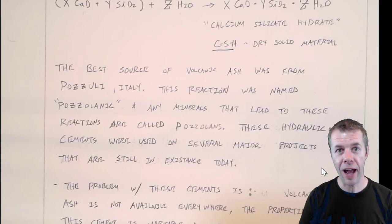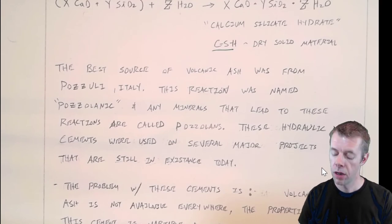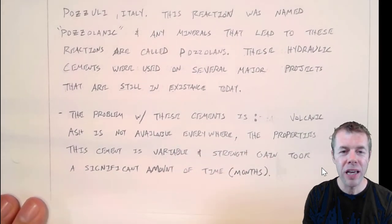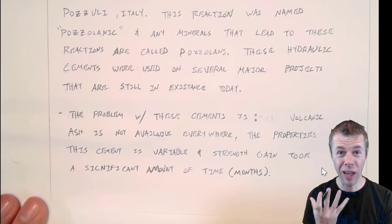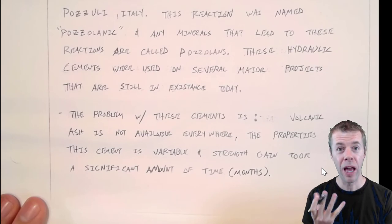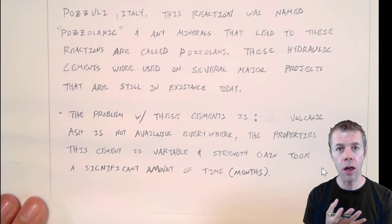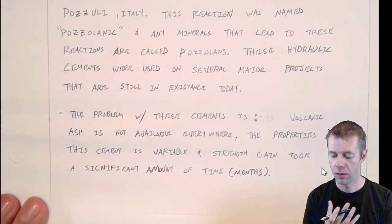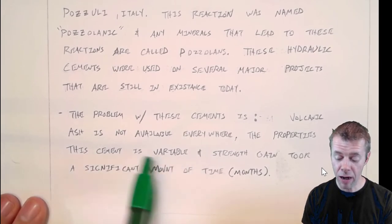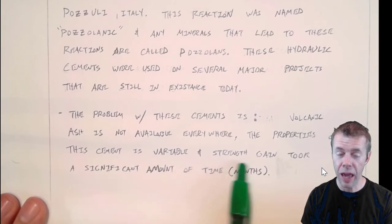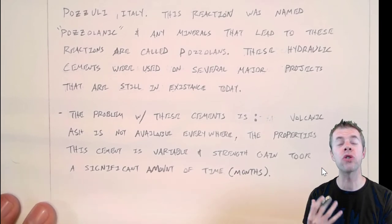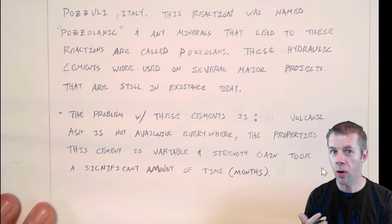Those Romans, pretty clever cats. There's a big problem, though. There's a big problem with these cements. Volcanic ash isn't available everywhere. You've got to be near a volcano. Also, when they were digging it out of the volcano, it's quite variable. As in, one area may produce great cement, and another area would produce horrible cement. That's a problem. So, the cement is variable. You had to have an actual volcano. Another bad thing is the strength gain took months. Months. They wouldn't be able to use these structures for months after being built. But, they were long-lasting.